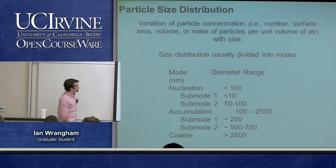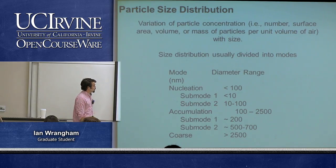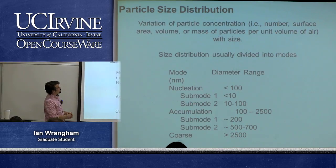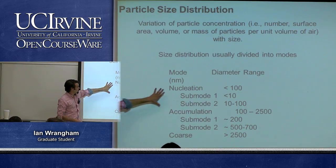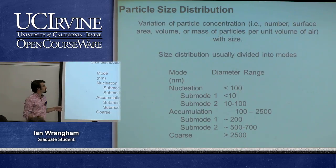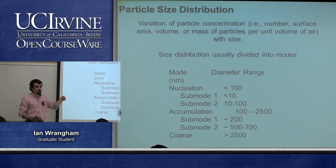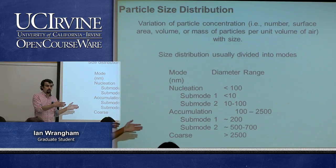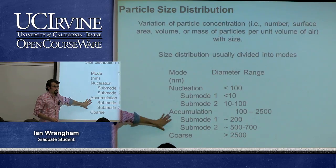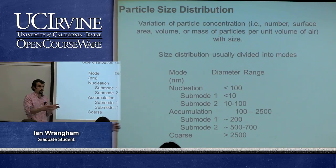Particle sizes are typically grouped into three modes: nucleation, accumulation, and coarse mode. Each mode represents a size bin. Aerosols tend to end up in one of these three size distributions. Think of them as three distinct size distribution curves.